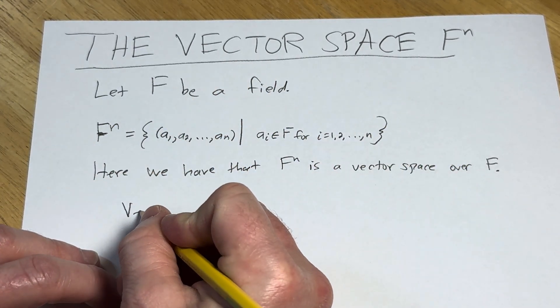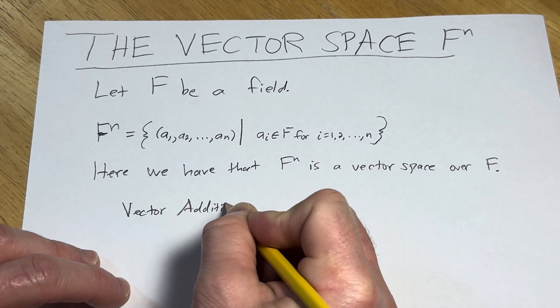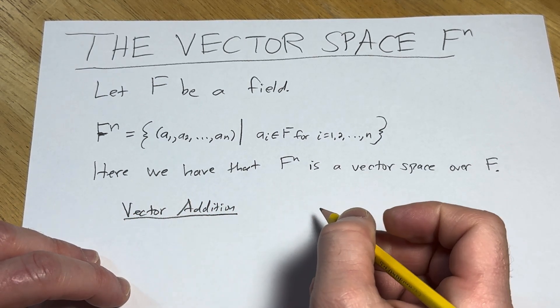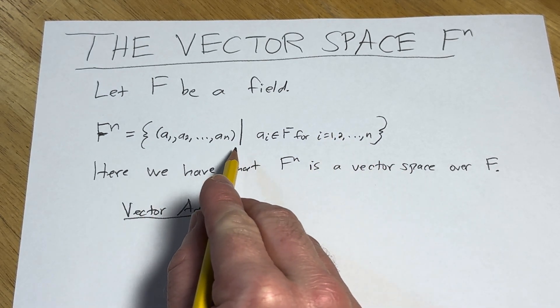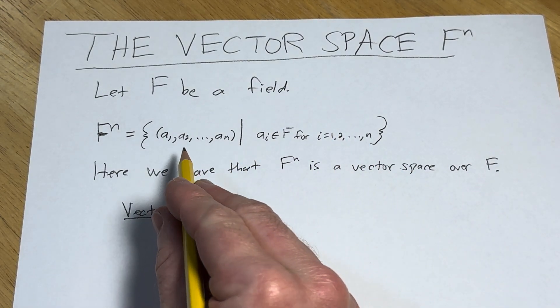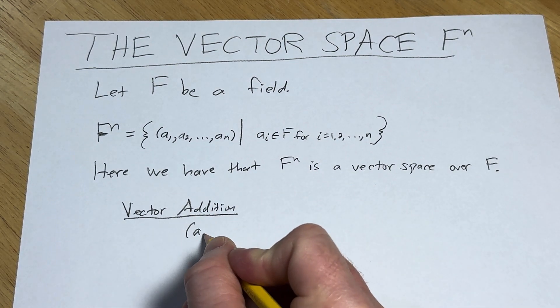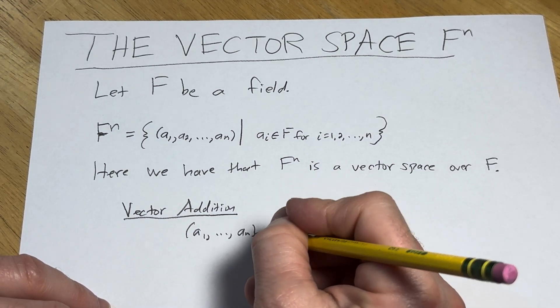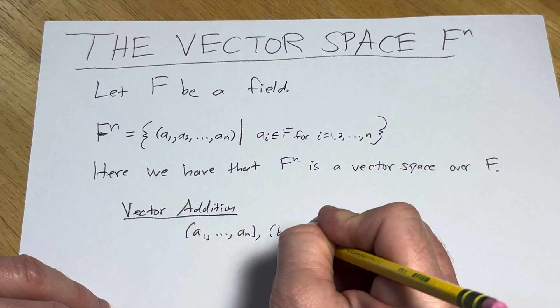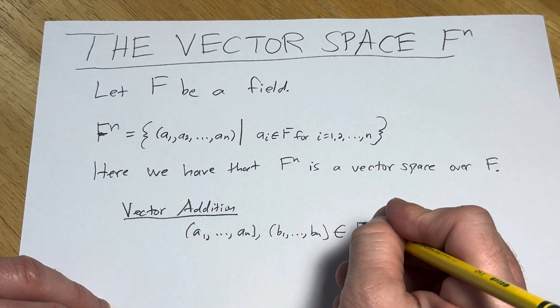Let's talk about the operations. So vector addition, that's one of the operations in a vector space. So how does that work? Well, if you take two elements, I guess we can use a sub 1s and b sub 1s. So take (a_1,...,a_n) and (b_1,...,b_n) in F^n.